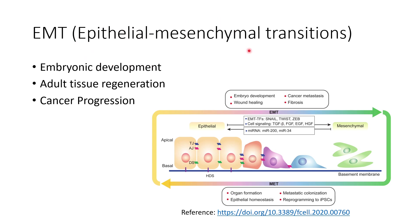This transition usually happens in three different ways. The first is during embryonic development, the second is during adult tissue regeneration — in both of these, the transition from epithelial to mesenchymal is highly regulated. The third context is during cancer progression.